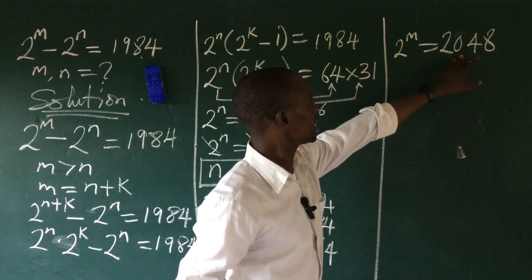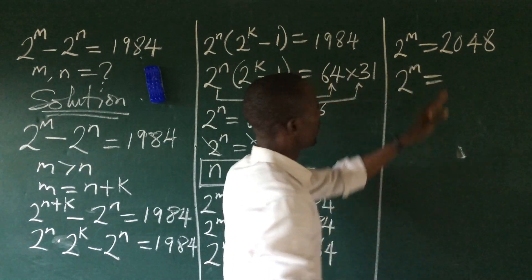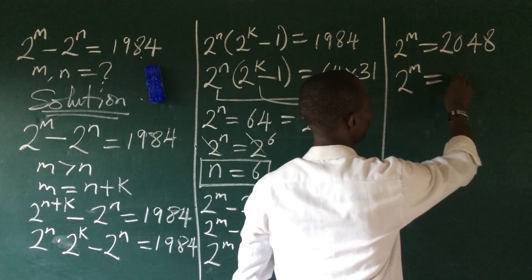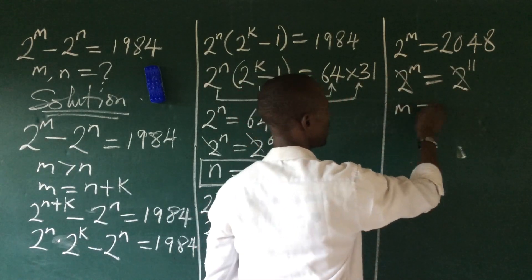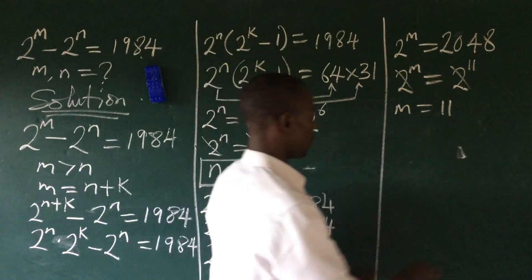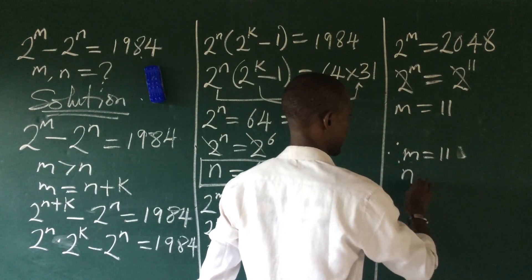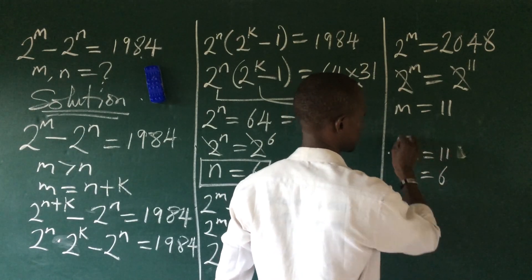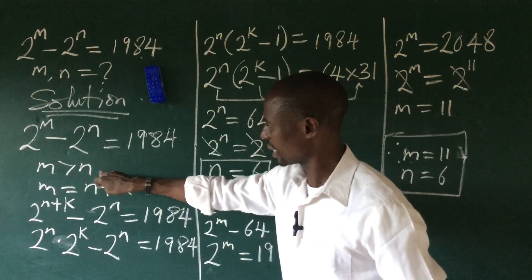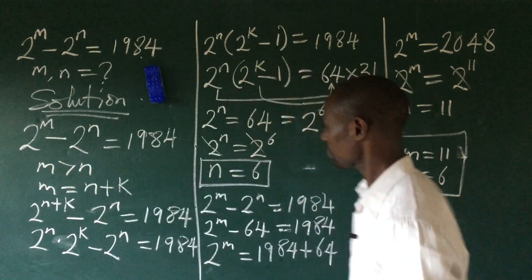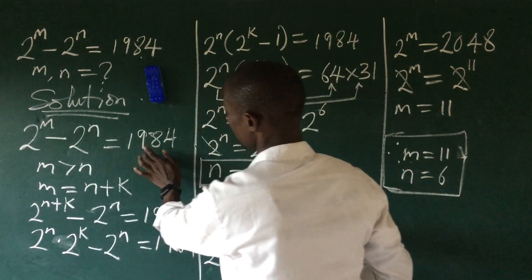From here, we express 2048 in base 2. This gives us 2 to the power of m equals 2 to the power of 11. Since the bases are the same, m equals 11. Therefore m equals 11 and n equals 6. We can verify: m is greater than n, and if you plug these values into the original equation and carry out the subtraction, it gives 1984.